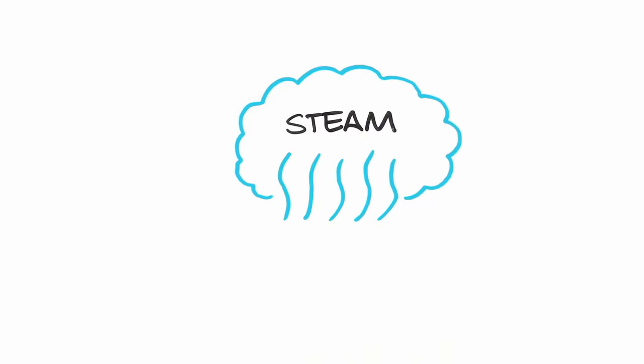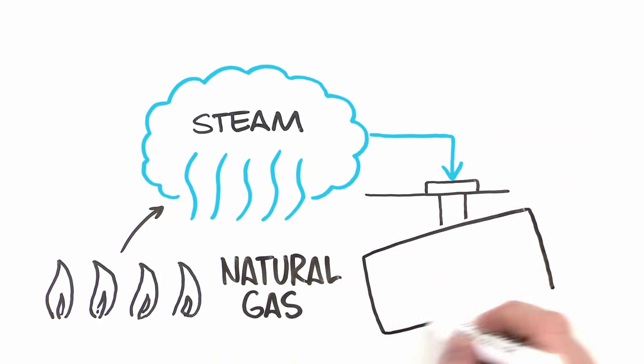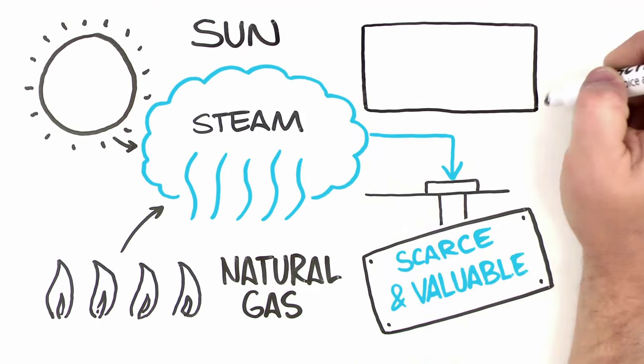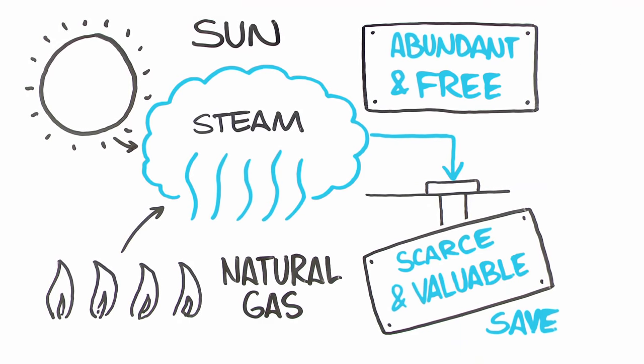Producing steam for EOR requires burning a huge amount of natural gas, a valuable resource that's in short supply in many of the world's oil-producing regions. Using the sun to generate steam for EOR significantly reduces the amount of natural gas burned.